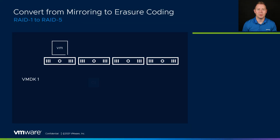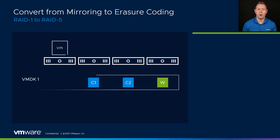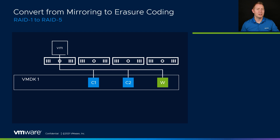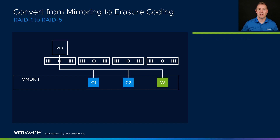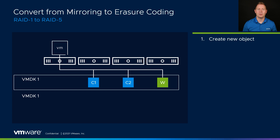Let's move on to our second example. This one is a little bit more involved, because we're converting from our RAID1 mirroring policy to our RAID5 erasure coding policy. On the backend, the first thing that vSAN does is create a brand new object. For this example, we're using a VMDK — it creates a brand new RAID5 VMDK object.